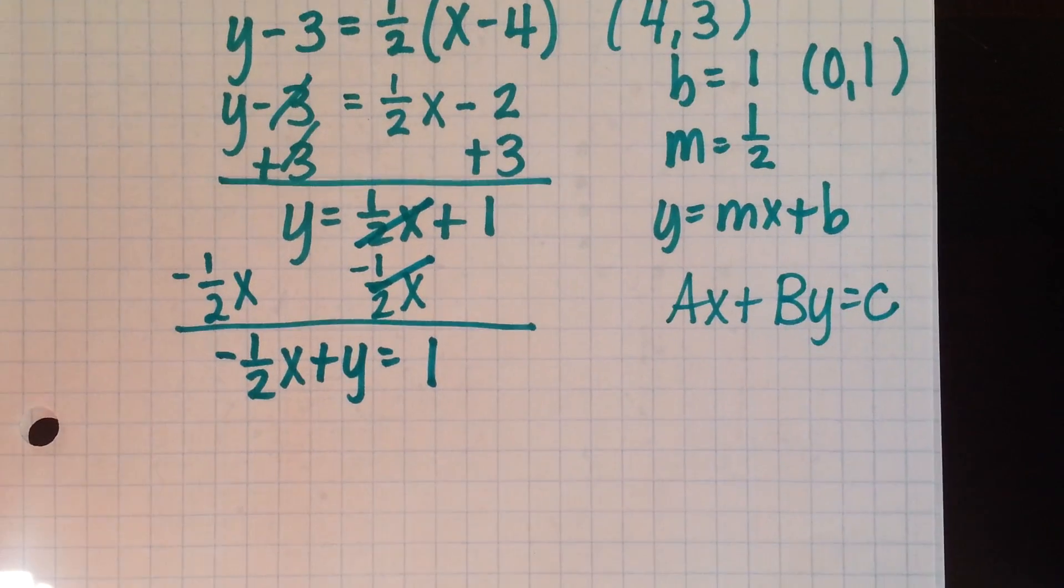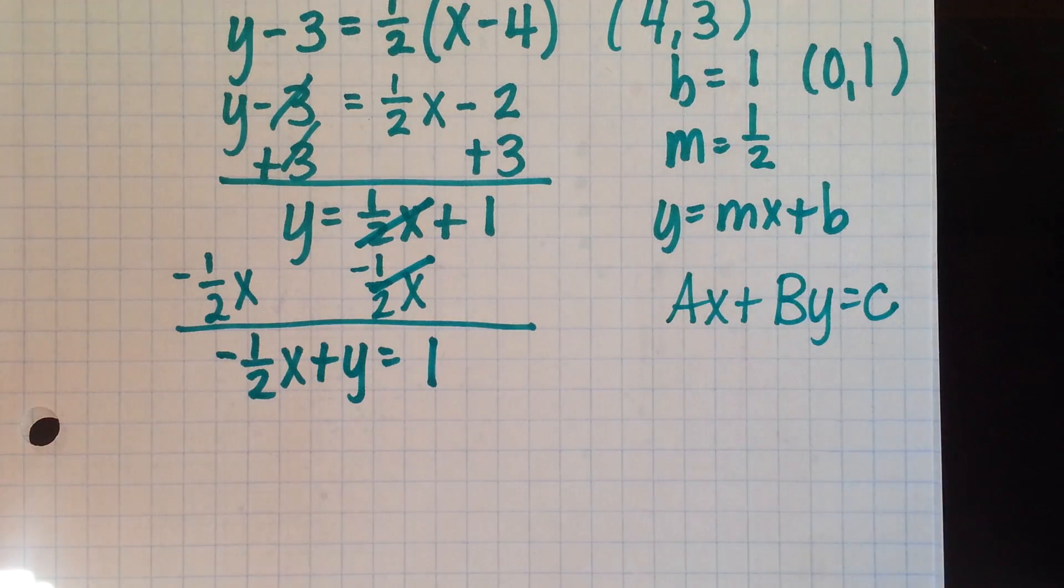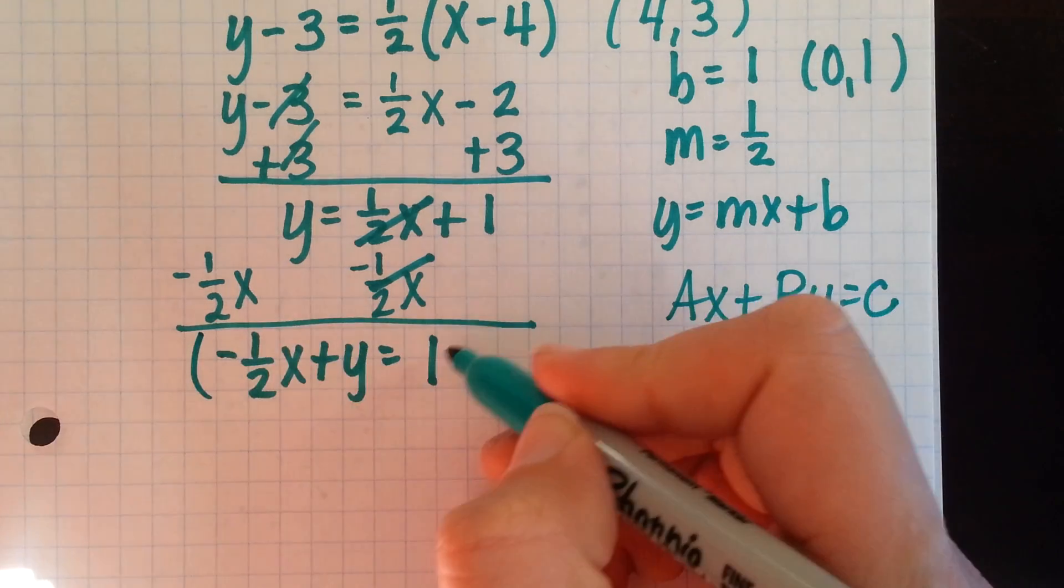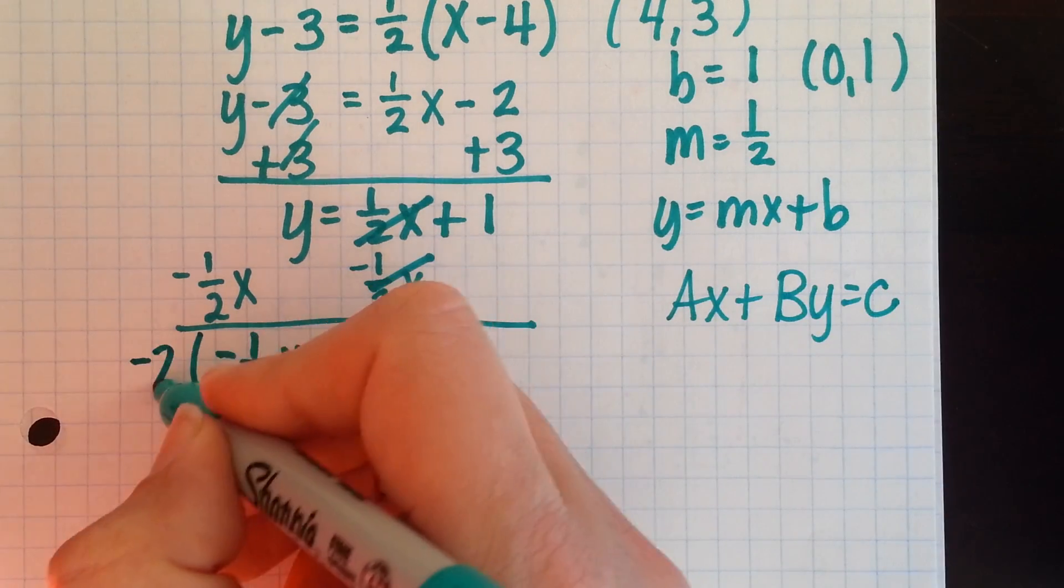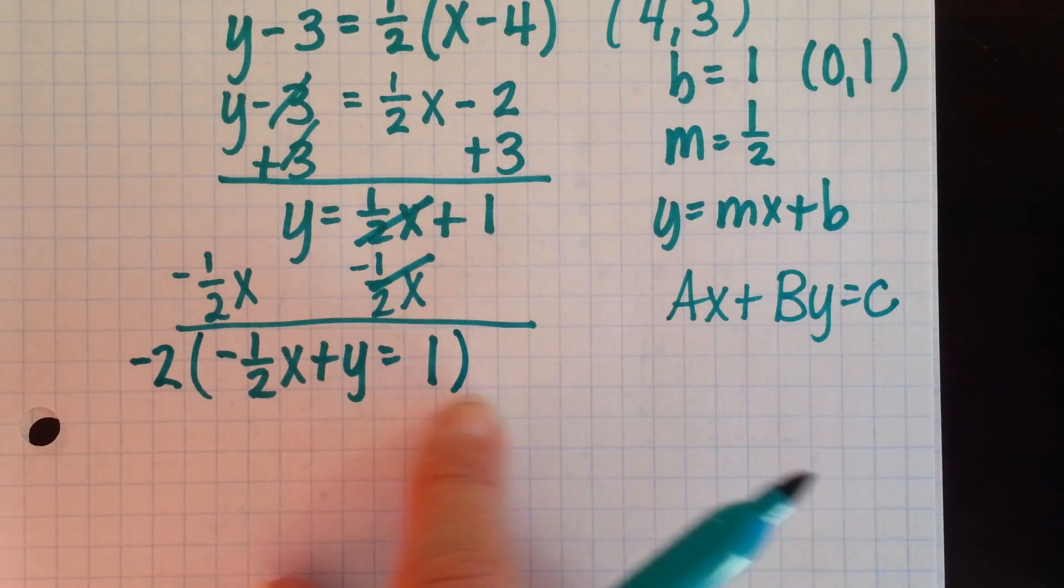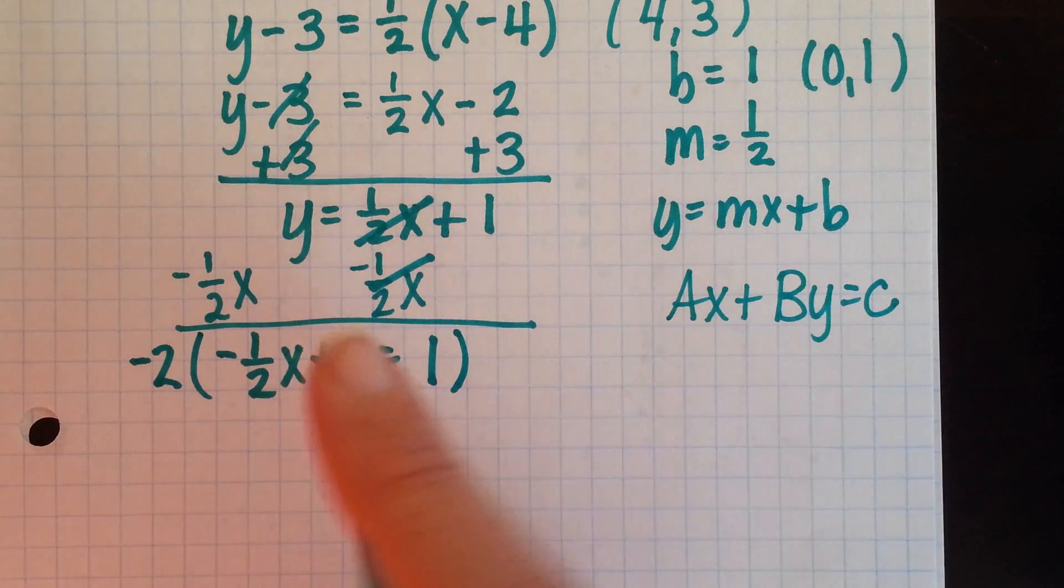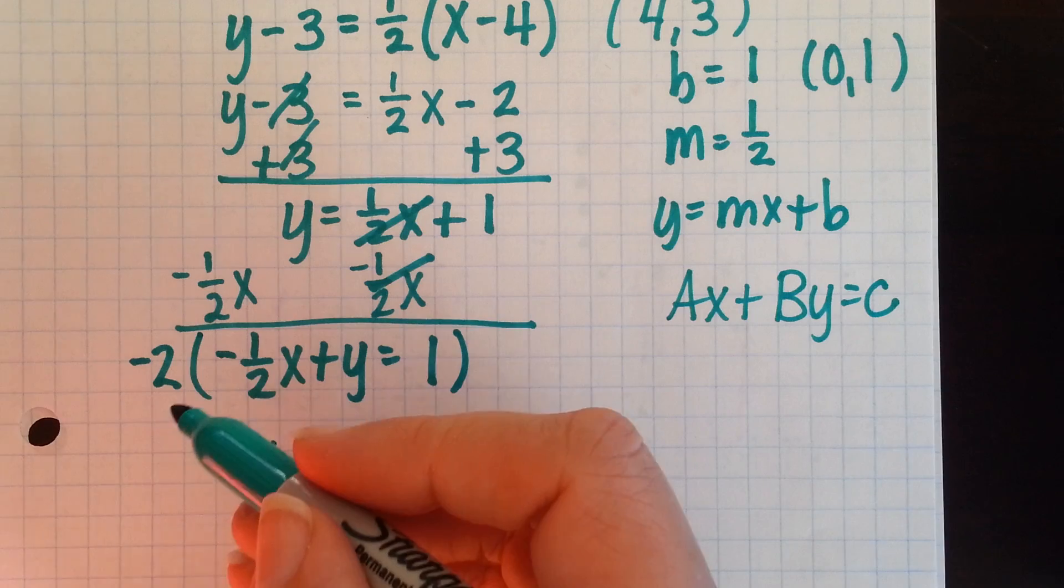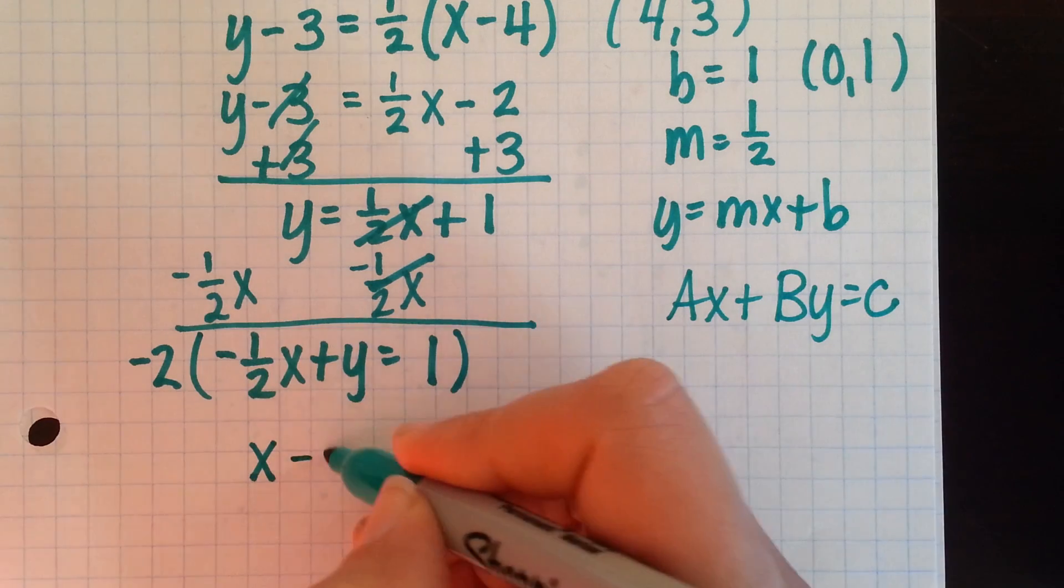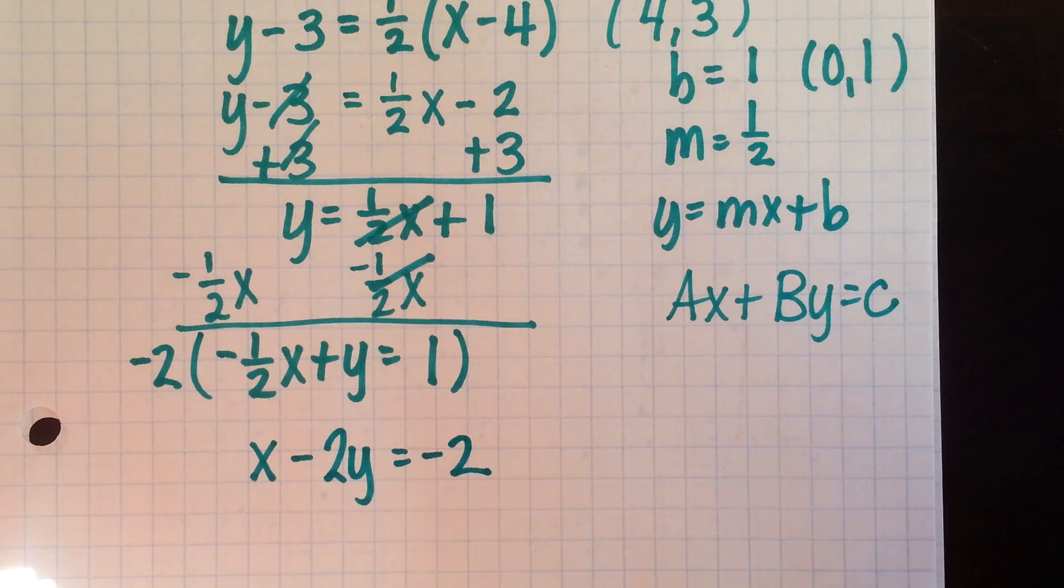So what we want to do next is get rid of this negative and this 1 half. We're going to do that by multiplying the whole equation by negative 2. We're multiplying by the negative to get rid of the negative, and we're multiplying by the 2 because that's what a common denominator would be if we were to find one. So negative and negative cancel, 2 and 2 cancel, leaving us 1x or just x. Negative 2 times y gives us negative 2y. Negative 2 times 1 gives us negative 2.